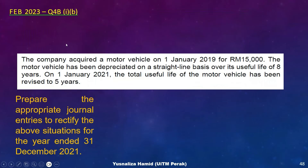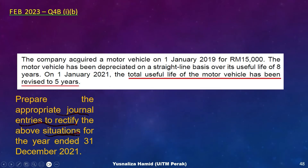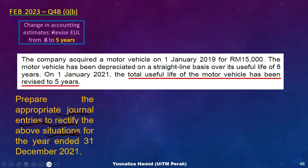Moving to requirement B, which requires preparing the appropriate journal entries to rectify or correct errors, or to revise if there is a change in accounting estimates. This should be for the current year ended 31st December 2021. We start with scenario 1, which is the change in accounting estimates identified earlier.